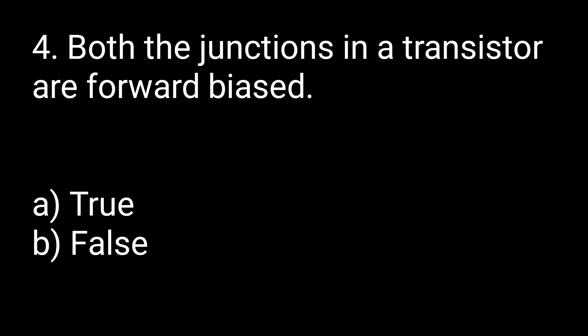The answer to question four is false — both junctions are not forward biased. The transistor has two junctions: the emitter-base junction and the collector-base junction. If the emitter-base junction is in forward bias, then the collector-base junction will be in reverse bias, and vice versa.